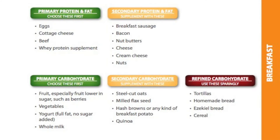If you look at breakfast, which is section 2.2, our primary breakfast proteins are eggs, cottage cheese, beef — steak and eggs is okay. Beef is good for breakfast. Or grass-fed whey protein. These are your primary proteins.